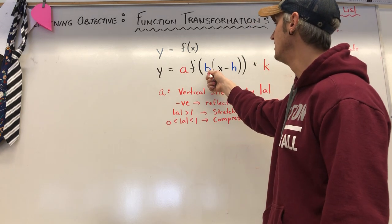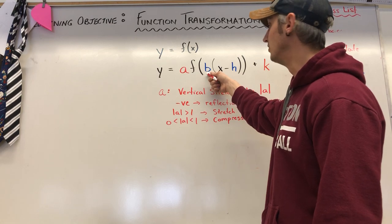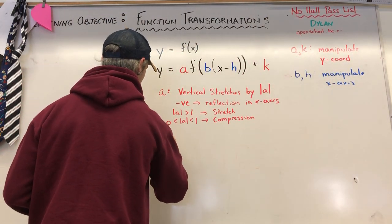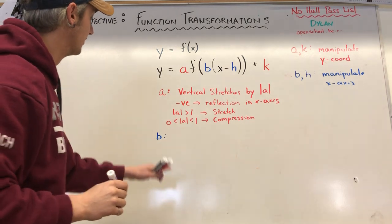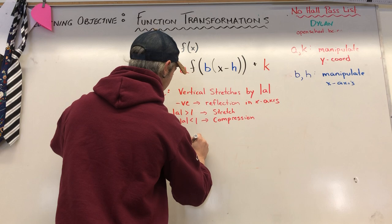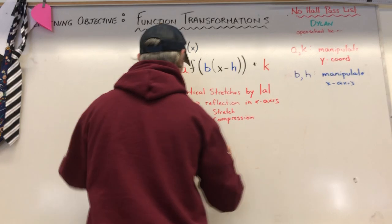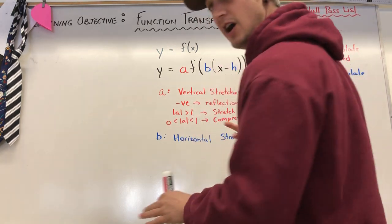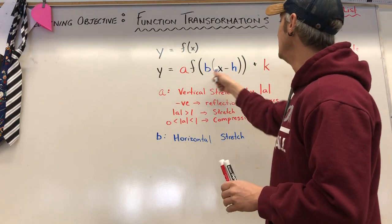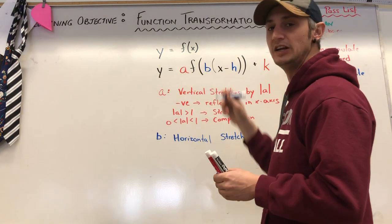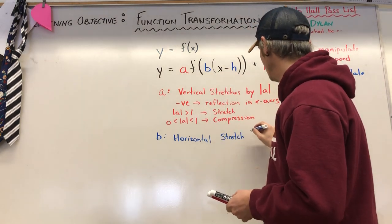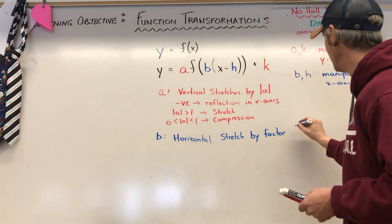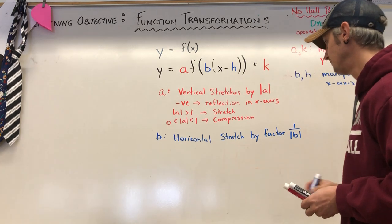The next thing we're going to look at is the horizontal, or x, version of 'a'. We have 'b', and just like 'a', b is going to be a horizontal stretch or compression. Now b and h act a bit funny — they do the opposite of what you'd expect. In this case we do a horizontal stretch by a factor of one divided by the absolute value of b, not by the absolute value of b itself.